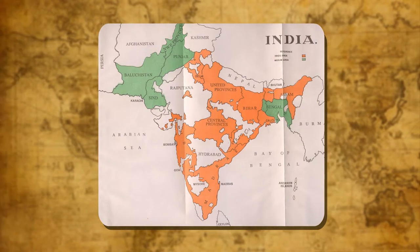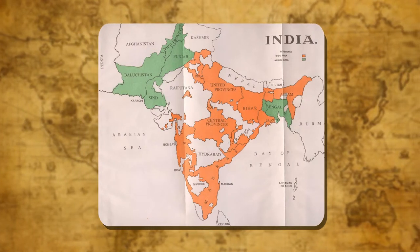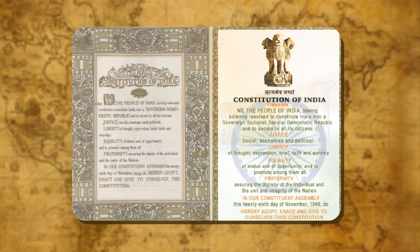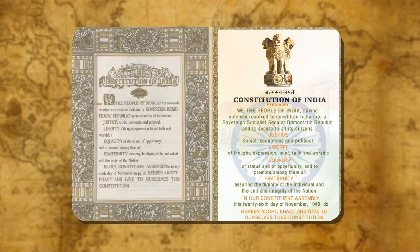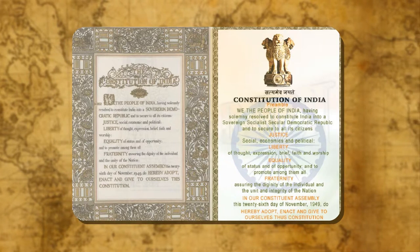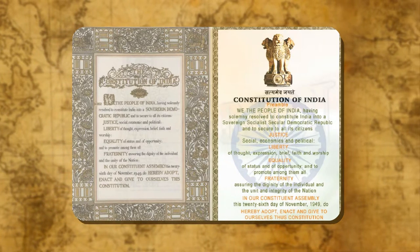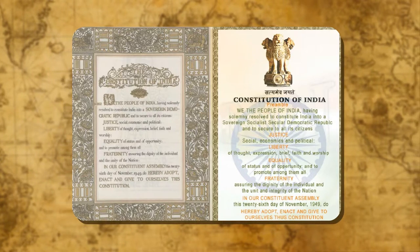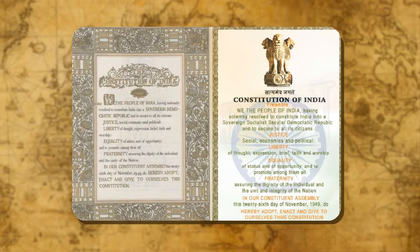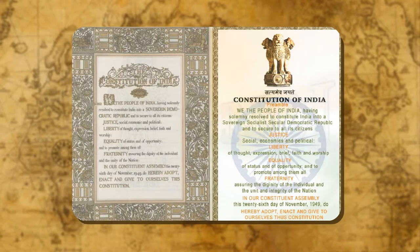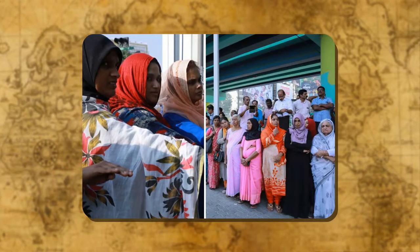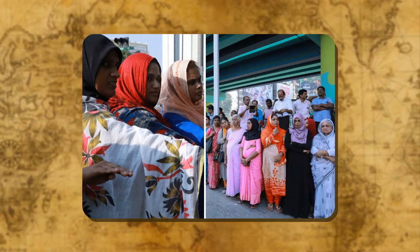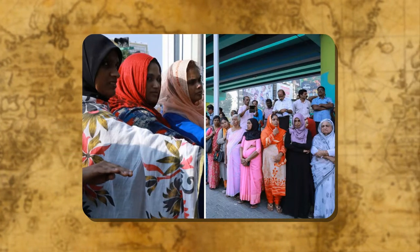India is a land where people belonging to different religions live together. Before the government, all people belonging to different religions are equal. Our constitution gives us the right to equality. But this does not mean that inequality does not exist anymore. It only means that our constitution formally accepts the principle of equality. This can discourage the government from discriminating, but not the society. In daily life, we find many examples of inequality still.